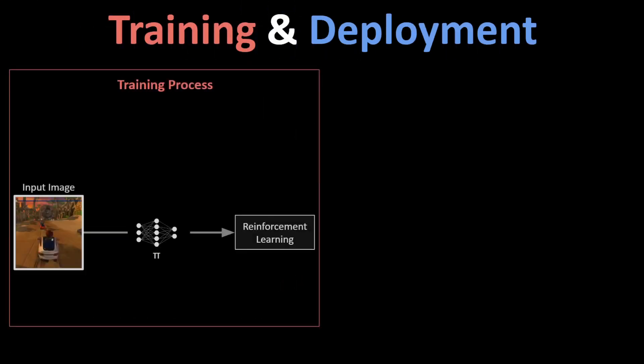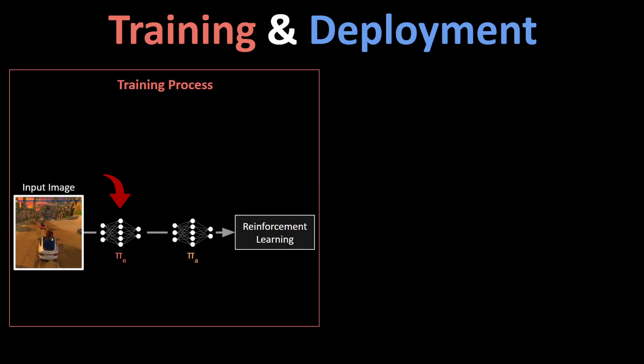Let's take a look at how this method adds deployment-time adaptation where there are no reward signals available to fine-tune the RL agent's learned policy. It separates the usual controller policy network into two parts: one part is responsible for learning useful latent representations from the pixel inputs, and the other part learns which actions to take based on these latents.